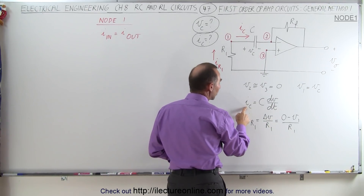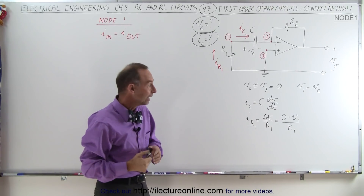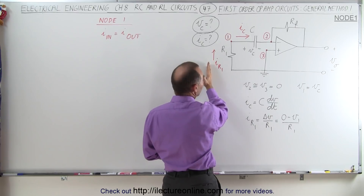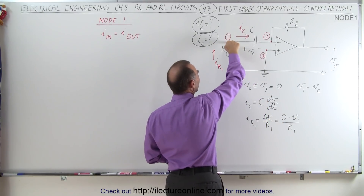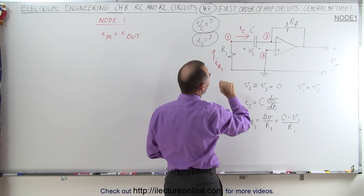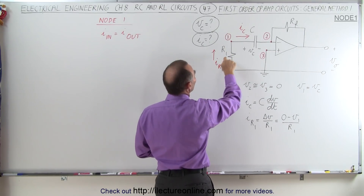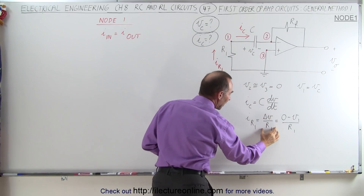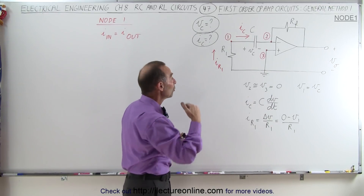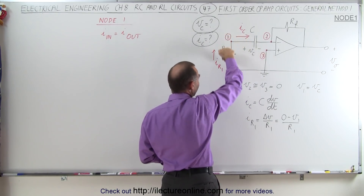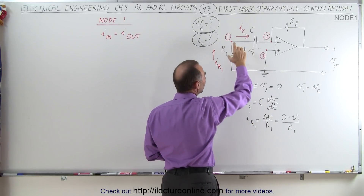By definition, the current through the capacitor is equal to the capacitance times the rate of change of the voltage with respect to time — the voltage across the capacitor, of course. The current through the resistor in the direction drawn is equal to the difference of the voltage across the resistor divided by the resistance. Since V1 is higher than 0, the current actually flows in the opposite direction, so by the assumed direction, the current is 0 minus V1 divided by the resistance.